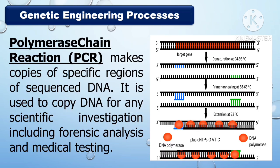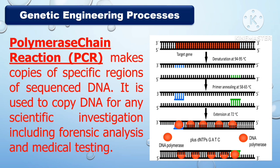Another genetic engineering process is the polymerase chain reaction. It makes copies of a specific region of sequenced DNA, and it is used to copy DNA for any scientific investigation, including forensic analysis and medical testing.